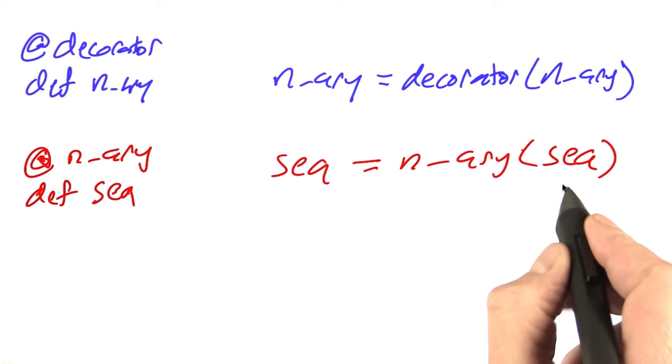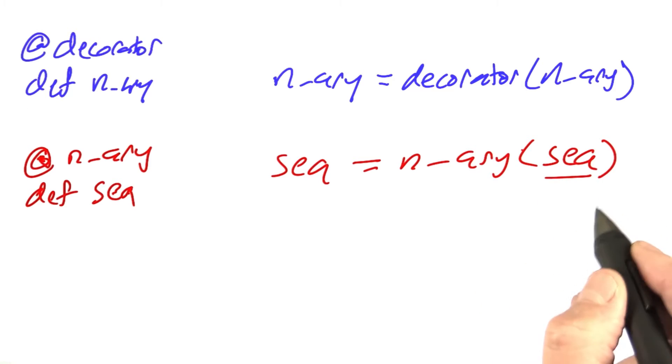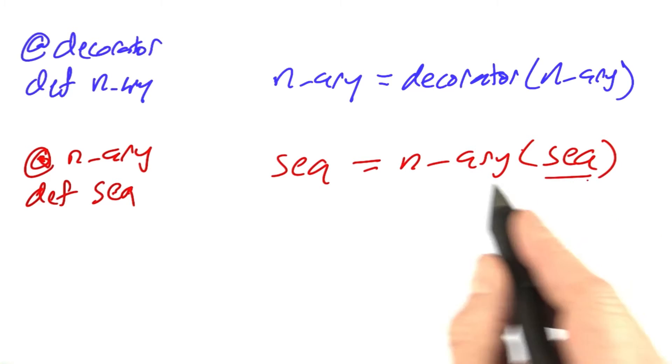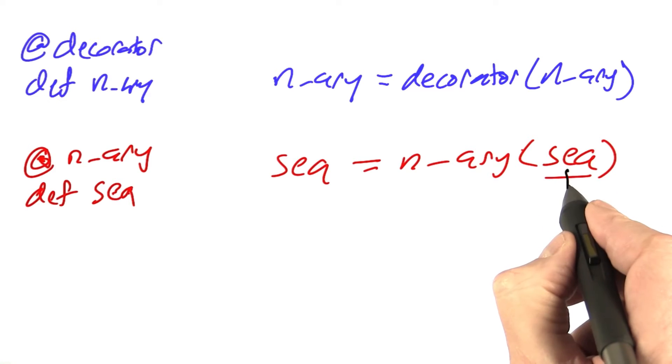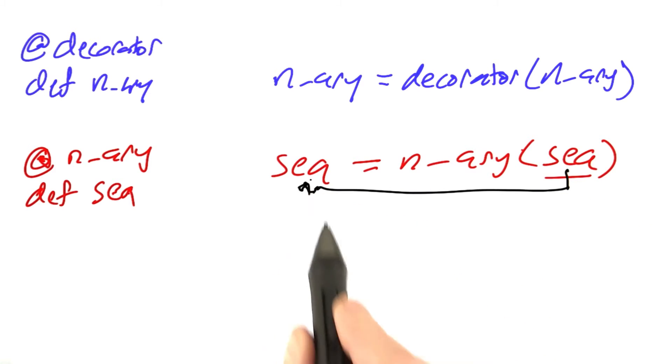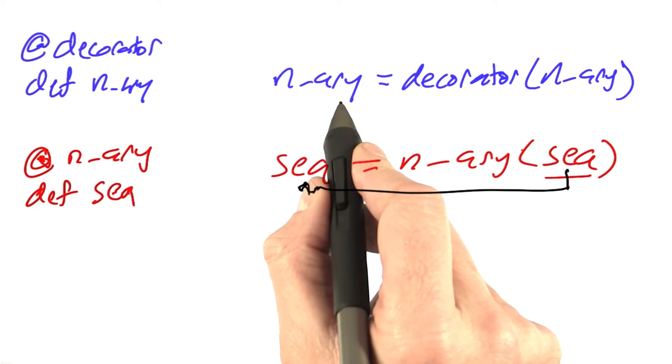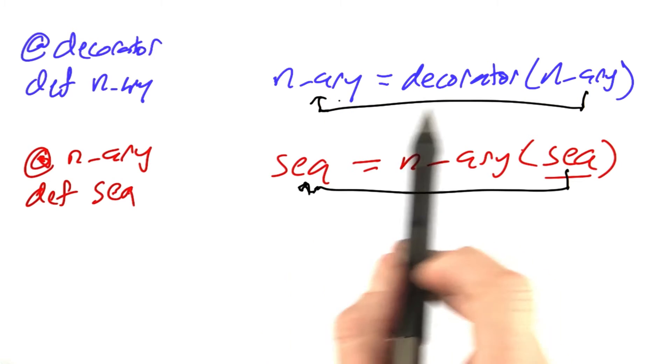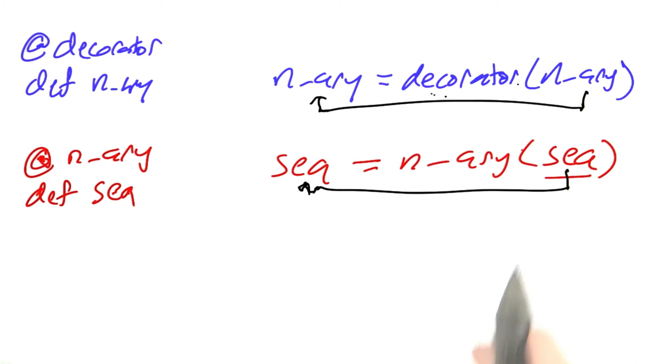Now, we wanted to make sure that there's an update so that the documentation and the name of sequence gets copied over. We want to take it from this function, pass it over to this function because that's the one we're going to keep. While we're at it, we might as well do it for nary as well. We want to have the name of nary be nary and not something arbitrary that came out of decorator. We've got two updates that we want to do for the function that we've decorated and for the decorator itself.